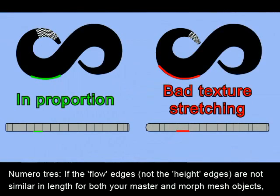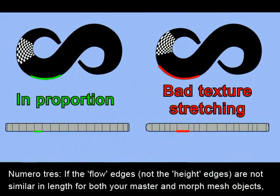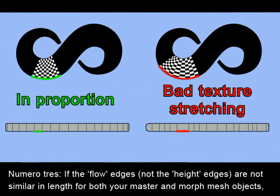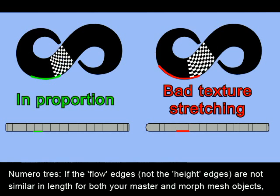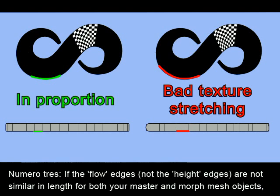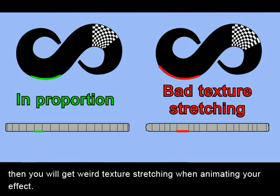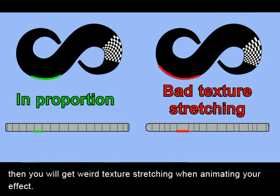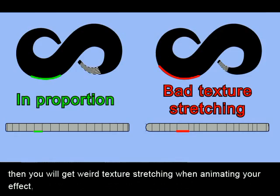Number 3: if the flow edges — not the high edges — are not similar in length for both your master and morph mesh objects, then you'll get weird texture stretching when you animate your effect.